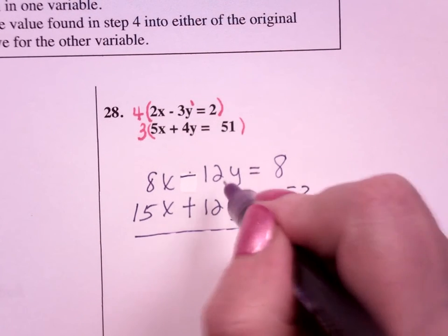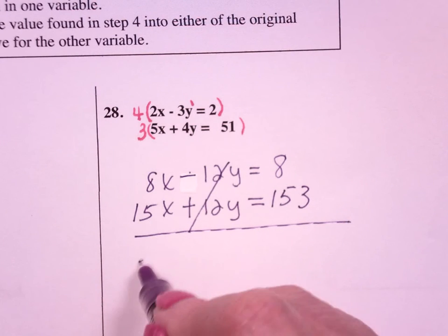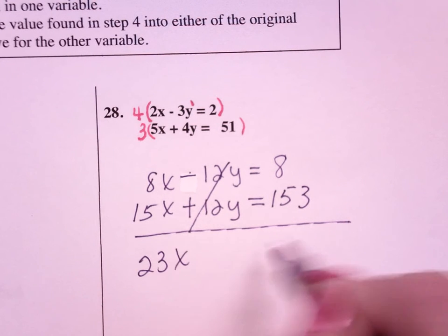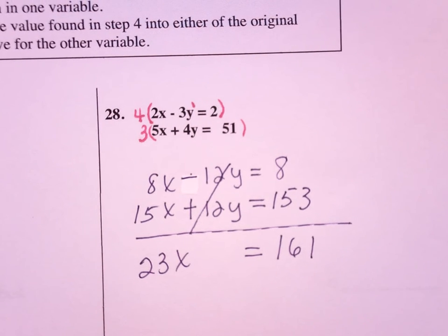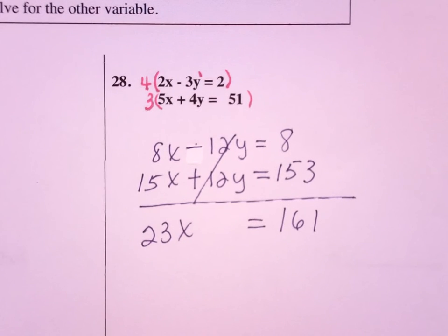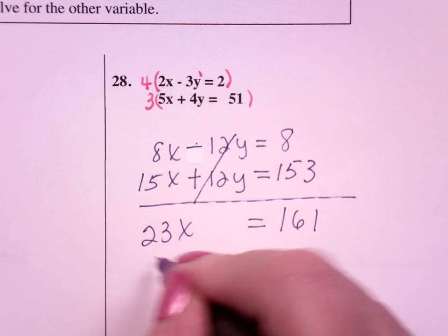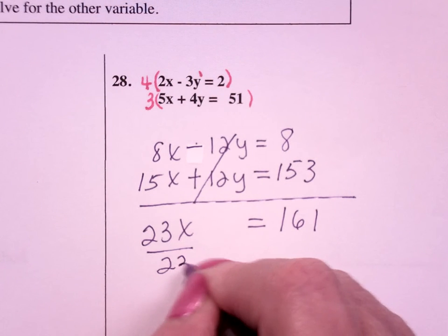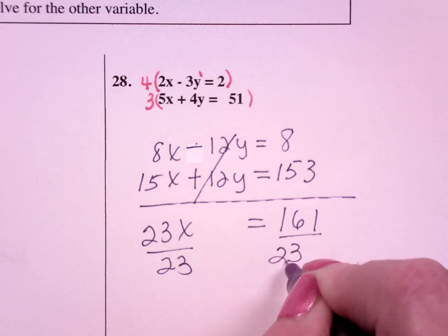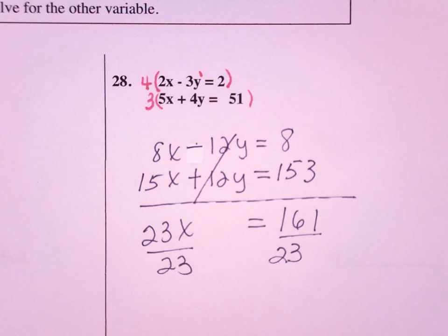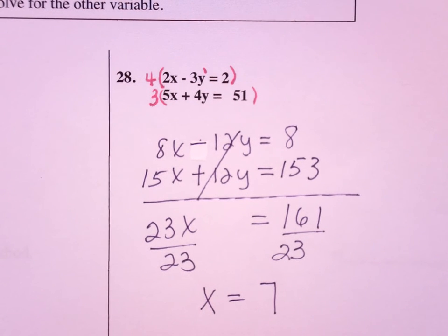Now when you add, the y's go to 0. So 23x equals 161. Divide both sides by 23. My guess is that x is 7.